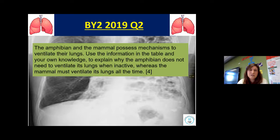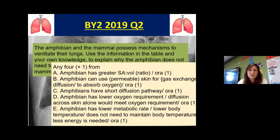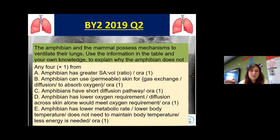This question relates to amphibians. The amphibian has a greater surface area to volume ratio. The amphibian can use skin for gas exchange. Amphibians have a short diffusion pathway, a lower oxygen requirement, and a lower metabolic rate — or you could say the opposite for mammals.